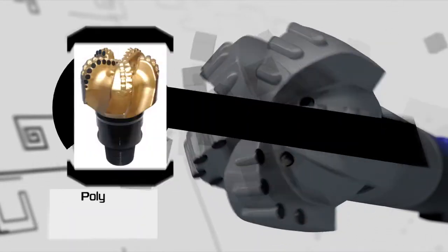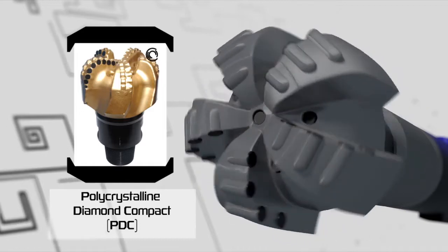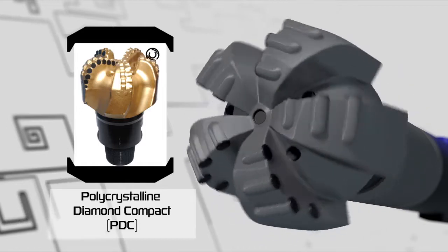A commonly used fixed cutter drill bit is the polycrystalline diamond compact, also known as PDC. These bits generally drill faster and last longer than roller cone bits.